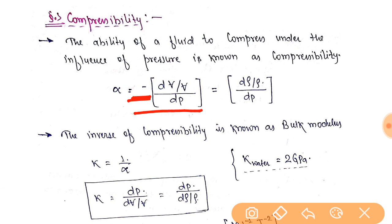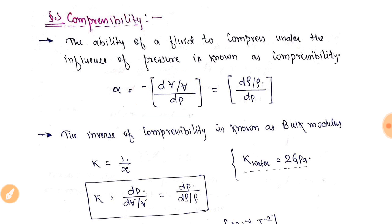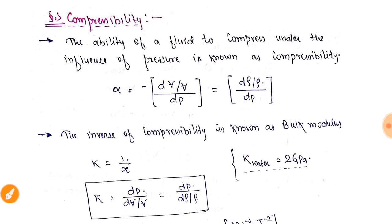We denote it with a minus sign because the volume is decreasing. This is the change in volumetric strain divided by change in pressure — dV/V by dP. The same thing can also be written as dρ/ρ — that is, change in density divided by density — upon change in pressure dP.